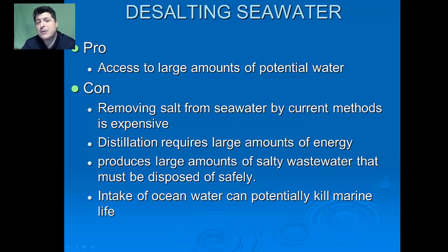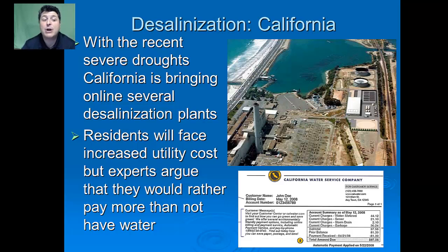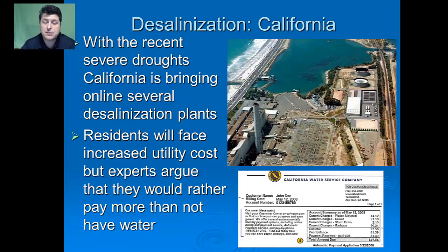The large intake turbines that pull water in can also kill a lot of marine life. We mostly see desalination in places like the Middle East, but with recent droughts in California, several desalination plants are being brought online. Residents will likely face increased utility costs, but experts argue they'd rather pay more than not have access to water.